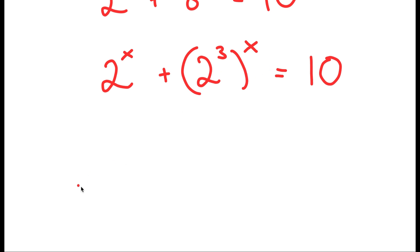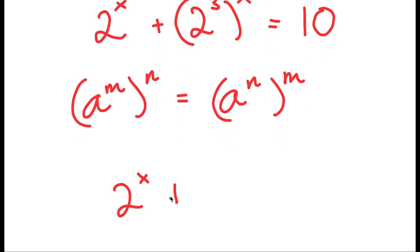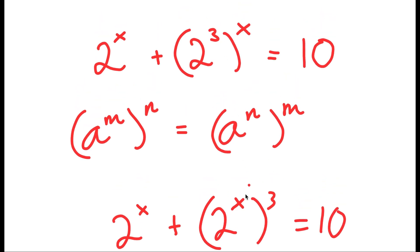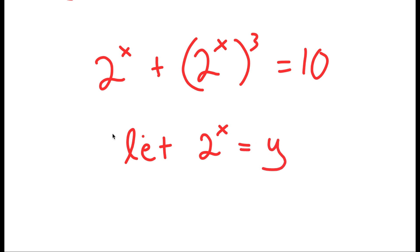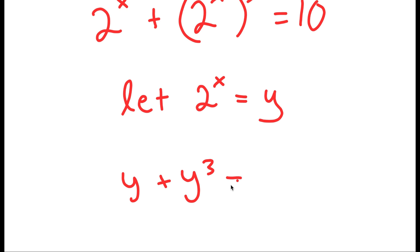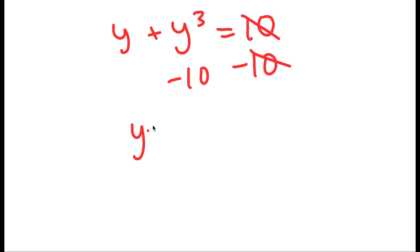Now from here, if I have something in the form a to the power of m to the power of n, this is equal to a to the power of n to the power of m. So I get 2 to the power of x plus 2 to the power of x cubed is equal to 10, because I switched the places of 3 and x. I'm going to let 2 to the power of x equal to the variable y. So now I get y plus y cubed is equal to 10, and if I subtract 10 on both sides, I get y cubed plus y minus 10 is equal to 0.